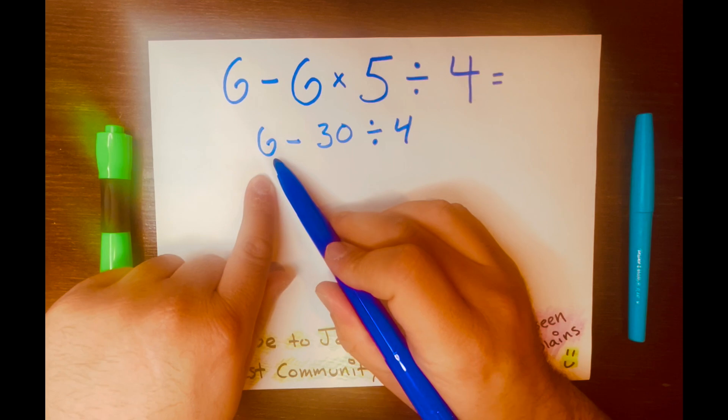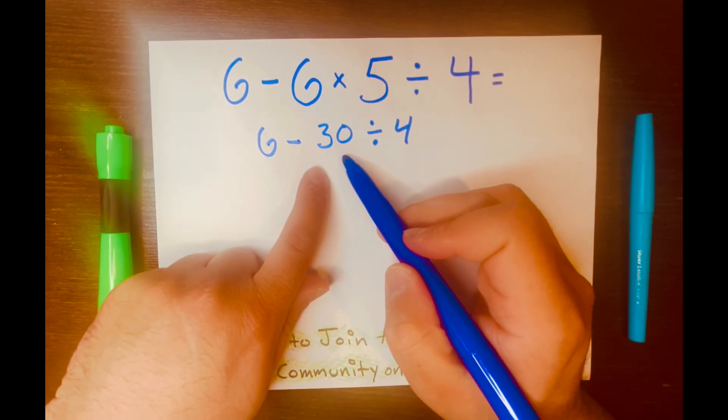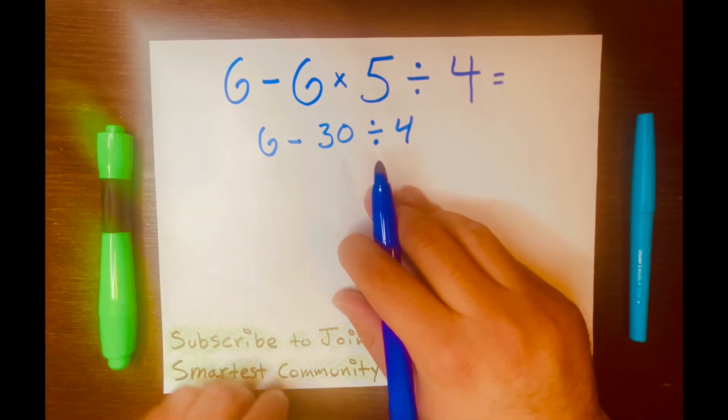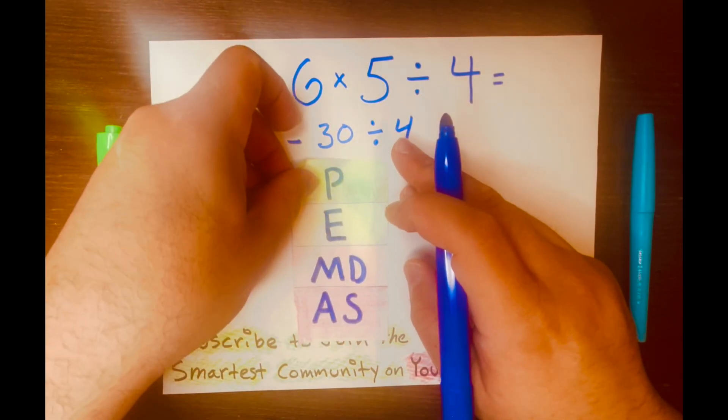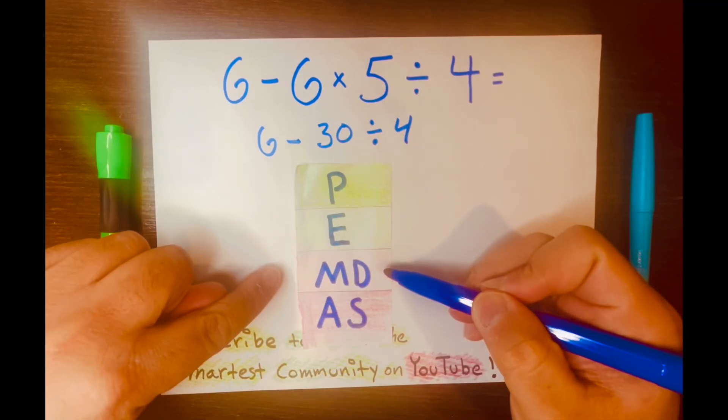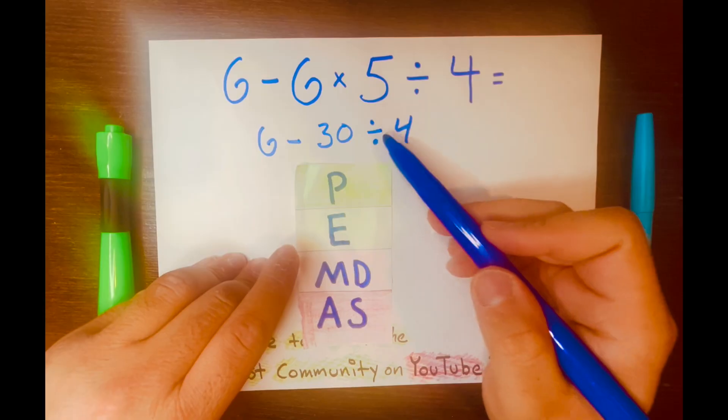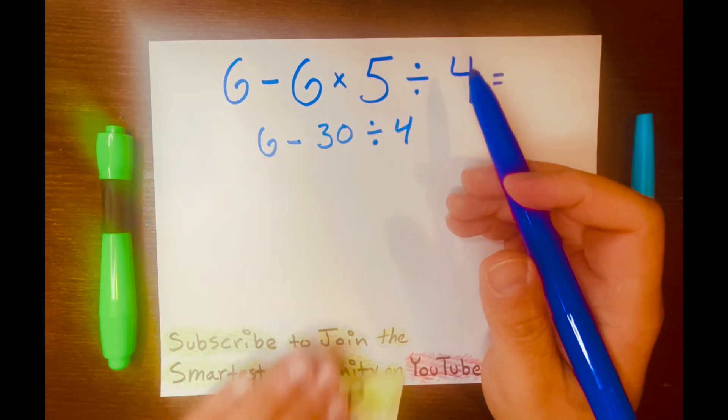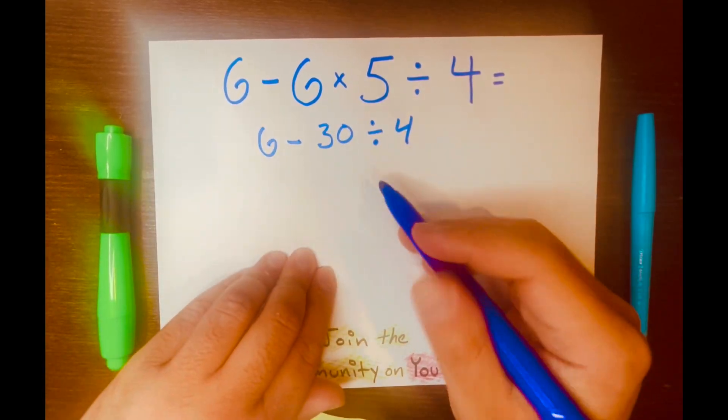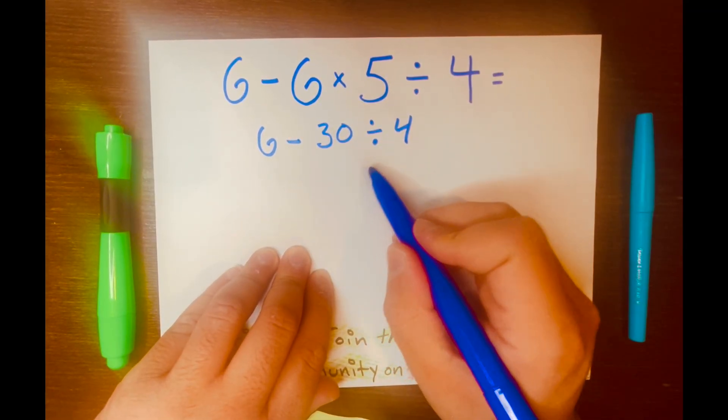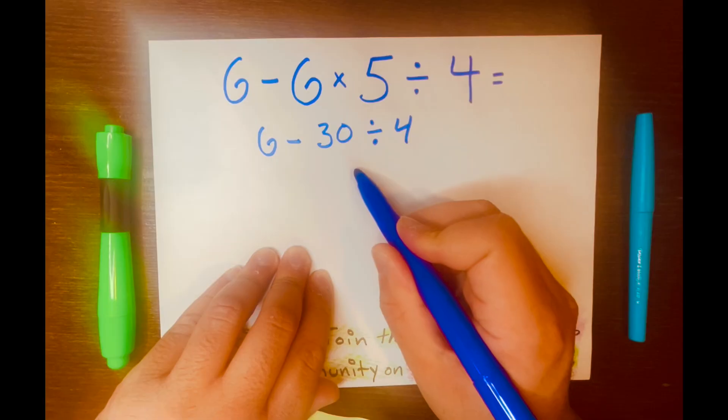Now, we're looking at 6 minus 30 divided by 4. Next, let's look at PEMDAS again, and see that division will go first, not subtraction. So, 30 divided by 4 will go first, not 6 minus 30. To make the math fun and easy,